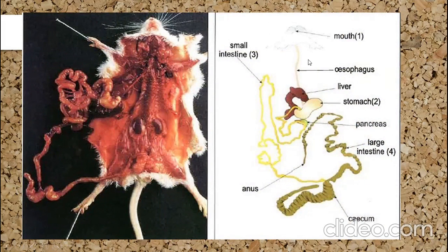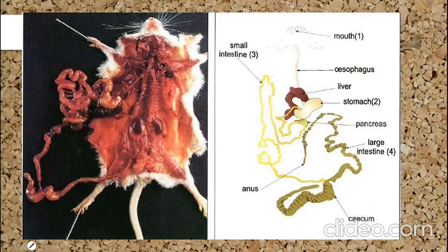For example, we have the digestive system of a mouse. The digestive system has two parts: the digestive tube and the digestive glands. Let's start with the digestive tube. The digestive tube starts with the mouth — the place where the animal enters the food.